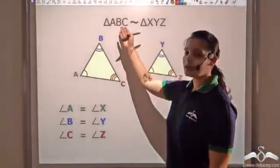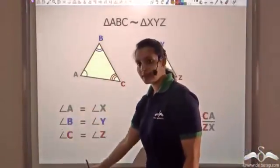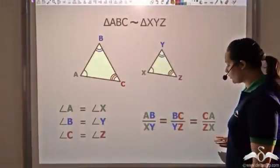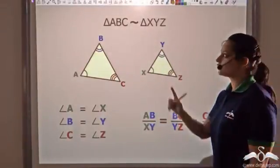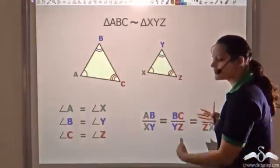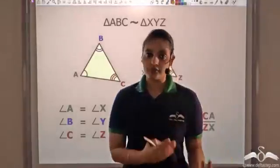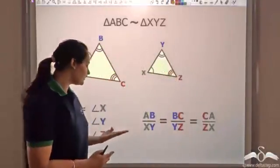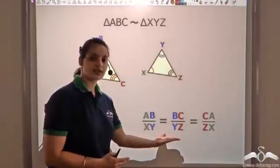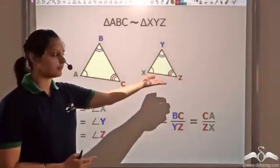We have seen that if two triangles are similar, then all the corresponding angles are equal and the ratio of the corresponding sides is also equal. Conversely, if the corresponding angles are equal and the ratio of sides of two triangles are equal, then we can say that these two triangles will be similar.